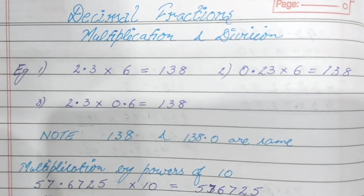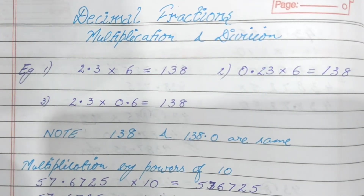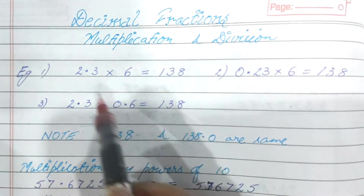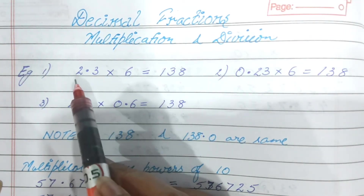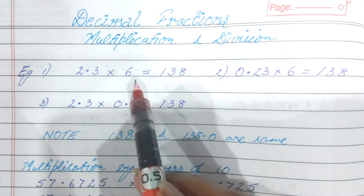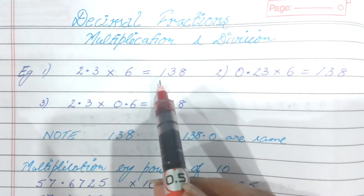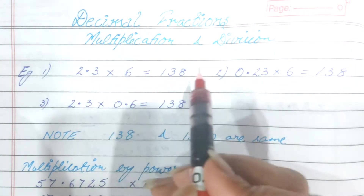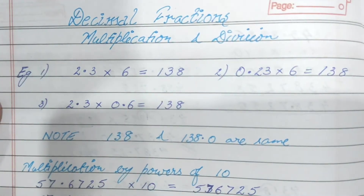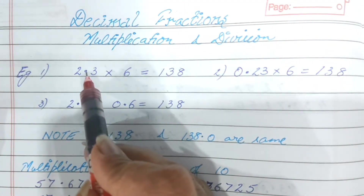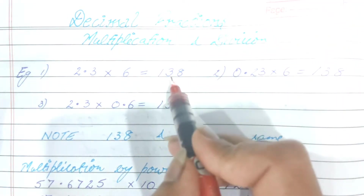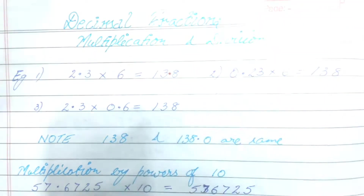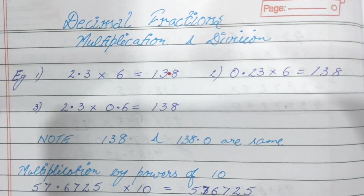I have taken an example to show you how we put the decimals in multiplication. I have to multiply 2.3 by 6. You do the normal multiplication, count the number of decimal places, and then in the answer, counting from the units place, we put the decimal. Like we have one decimal place, so from the units place count 1 and then put the decimal.